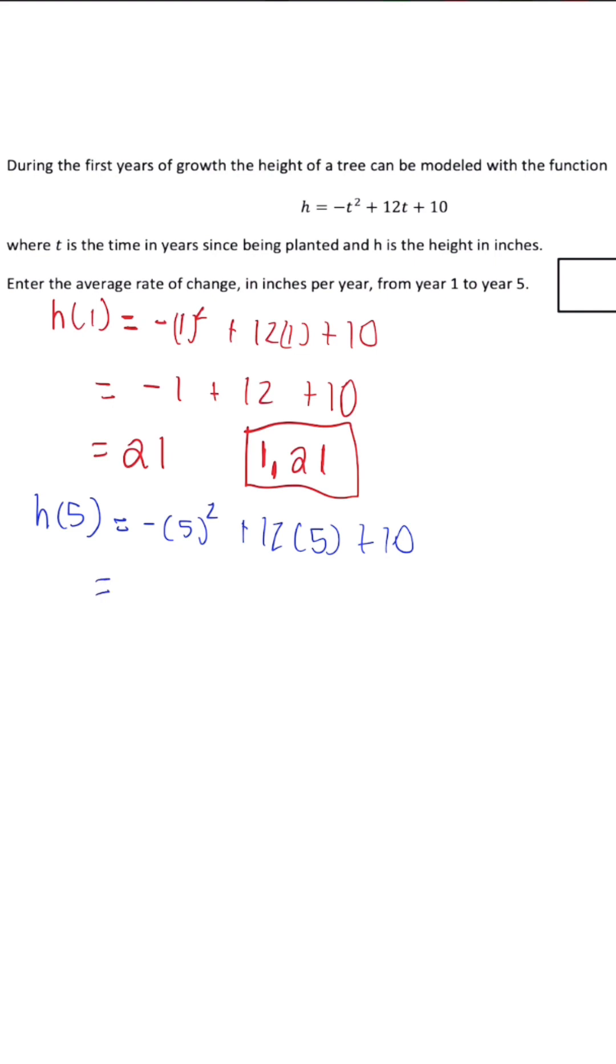We simplify to get negative 25 plus 60 plus 10. And when we simplify this, we're going to get positive 45. So the second ordered pair is 5, 45.